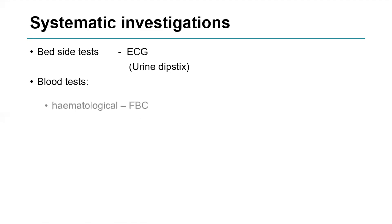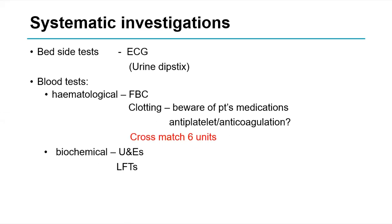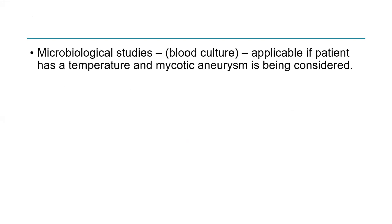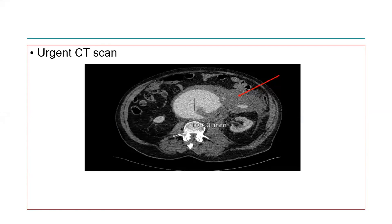Investigations: bedside tests — ECG, urine dipstick. ECG may show ischaemic changes that increase postoperative cardiac risk. Blood tests: full blood count for anaemia and platelets, clotting screen — be aware of antiplatelet and anticoagulant medications that may need reversing — and cross-match 6 units of blood ready for theatre. Biochemical tests: U&Es for renal function, LFTs. Arterial blood gas to assess metabolic changes. If a mycotic aneurysm is suspected, send blood cultures. Most importantly, a CT scan — this will confirm ruptured aneurysm. The image shows a large AAA with the arrow pointing to contrast extravasating into the retroperitoneal space.